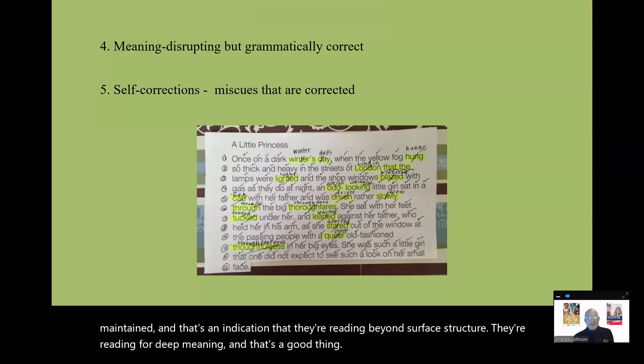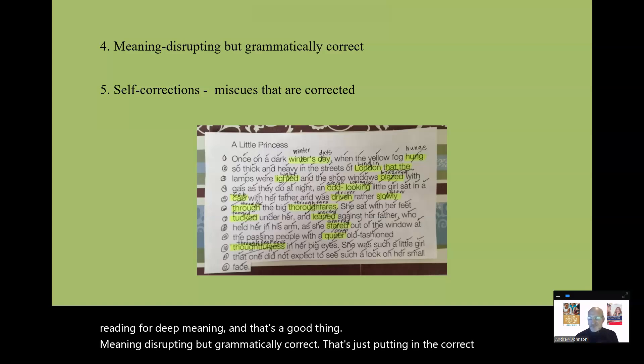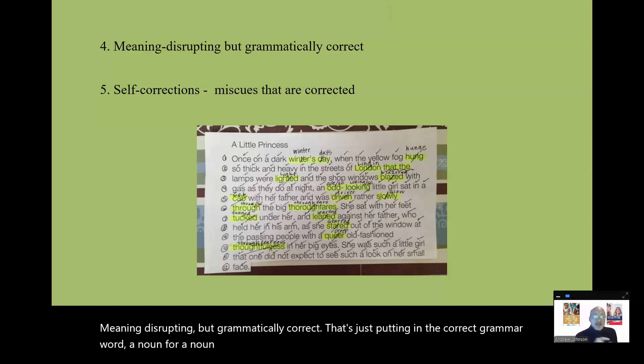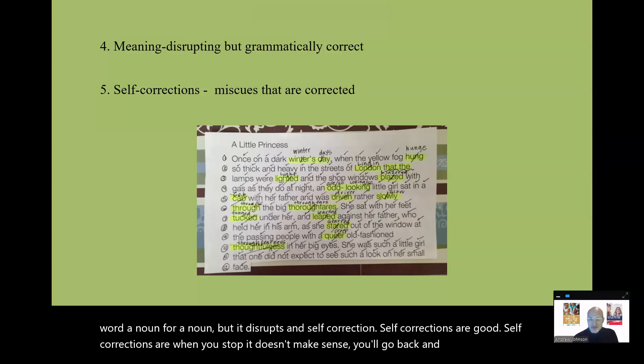Meaning disrupting, but grammatically correct. That's just putting in the correct grammar word, a noun for a noun, but it disrupts. And self-correction, self-corrections are good. Self-corrections are when you stop, it doesn't make sense, you'll go back and you correct. That represents mature reading behavior. That represents metacognition, is what I'm reading making sense.